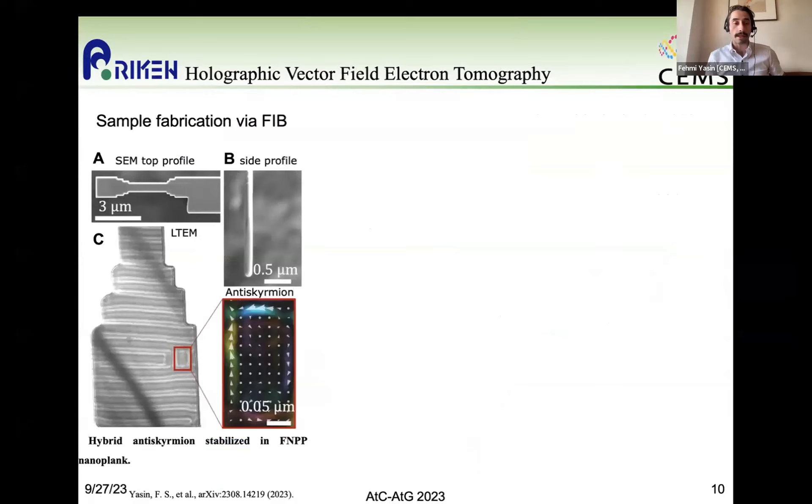So we used this technique. In order to use this technique, first we needed to make the device. So we took our material, this iron-nickel-palladium-phosphate material, and we fabricated in the FIB this nanoplank. And we actually shaped the tip of the nanoplank to be square-like. And we did this because we know that the shape anisotropy of this square-like tip will actually help to stabilize these room temperature zero-field antiskyrmion states. Here you can see it's embedded in a helical background, but we were able to stabilize just a single rectangular antiskyrmion.